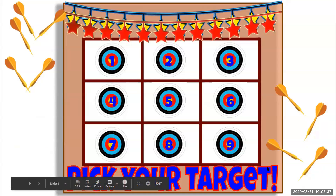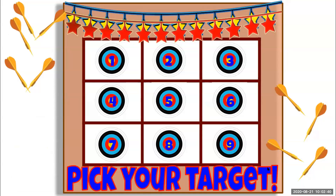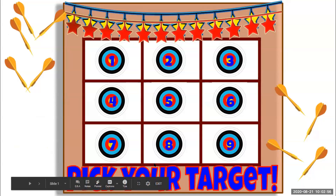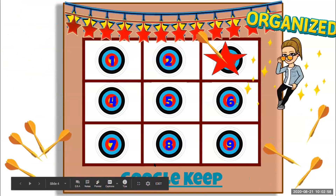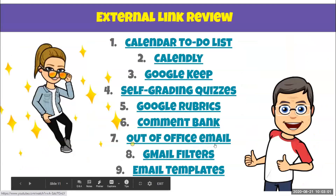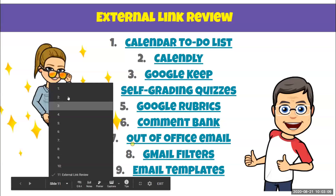We've got nine different things to look at having to do with email and all sorts of different things. We're going to just sort of go through them. This is a real quick overview — we're only going to take maybe two minutes for each of the nine just to show you what's possible. At the end, we'll share this slide deck with you and you'll have a chance to follow a link to learn more. This is the menu: calendar to-do lists, grading, emails, and things like that.